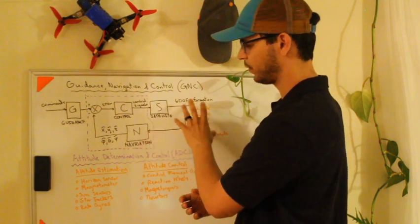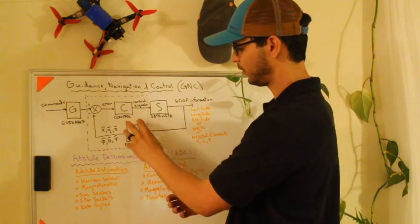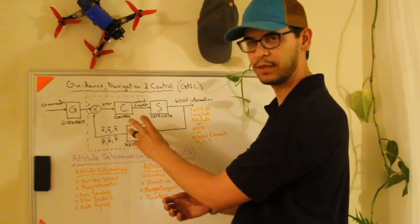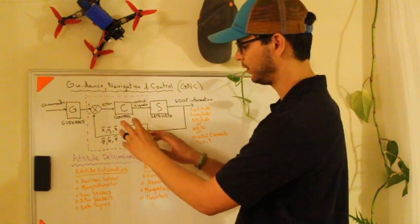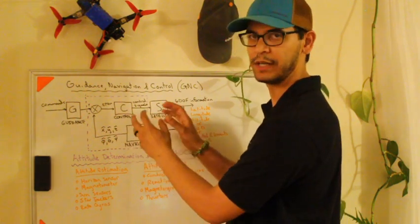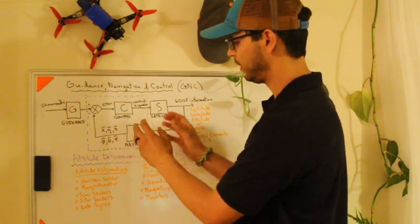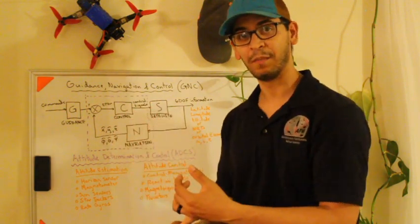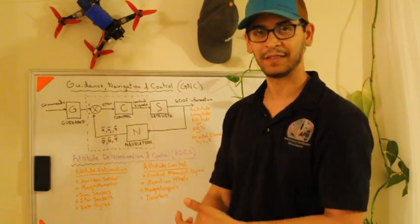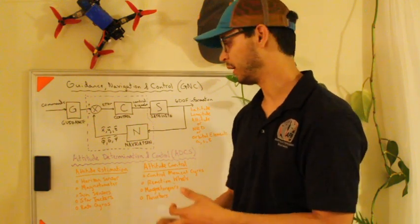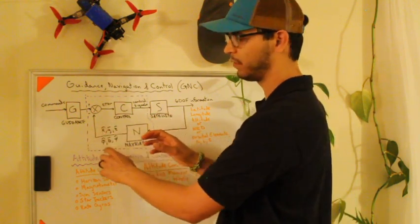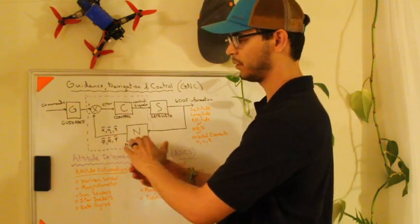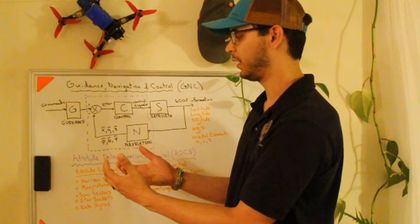I don't actually know this information, so I need what's called a navigation block. In control block diagram world, this is supposed to be a sensor block — things like your GPS, your rate gyros. This is going to estimate your state: where am I, how fast am I spinning, what angle am I pointing? I have tildes above these variables to essentially show that this is an estimate or a measurement of where I think I am.